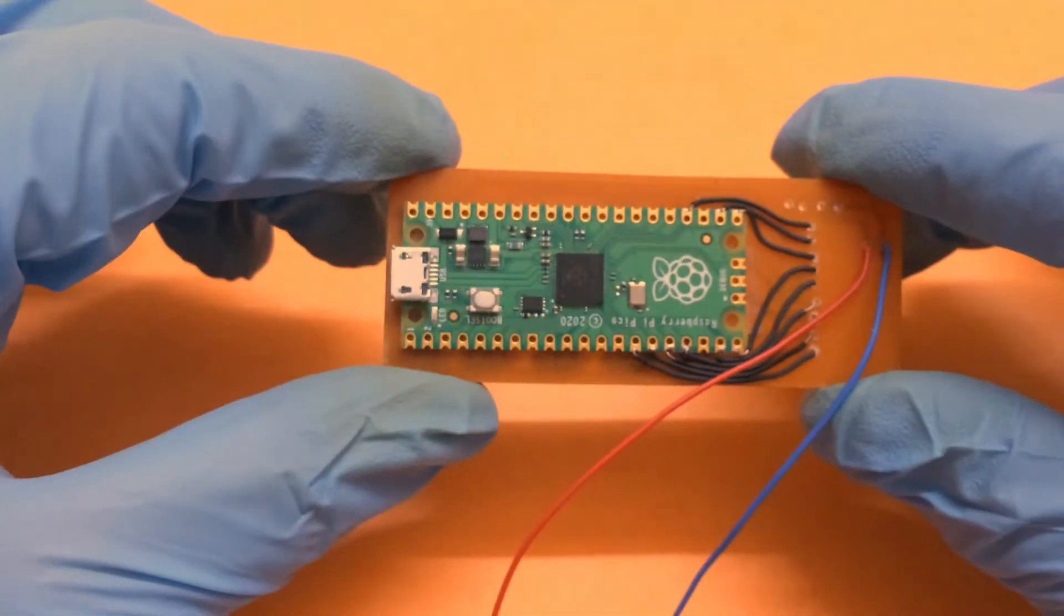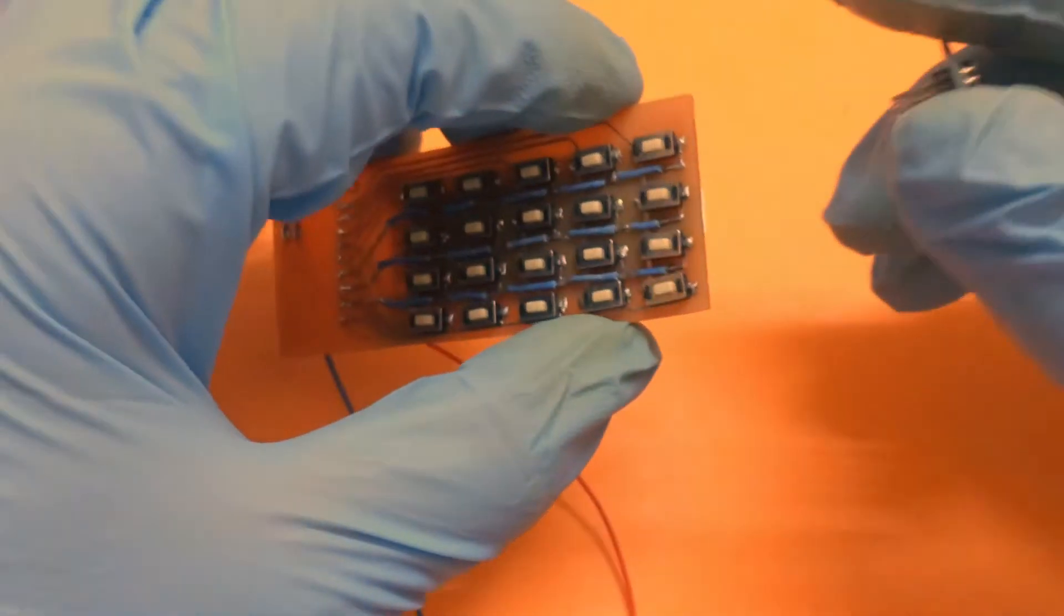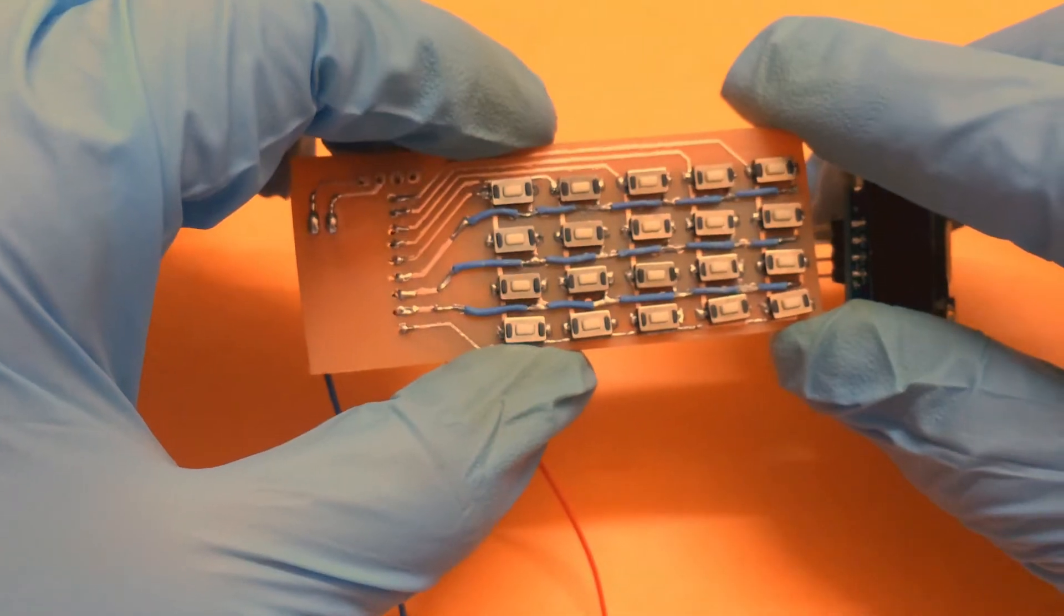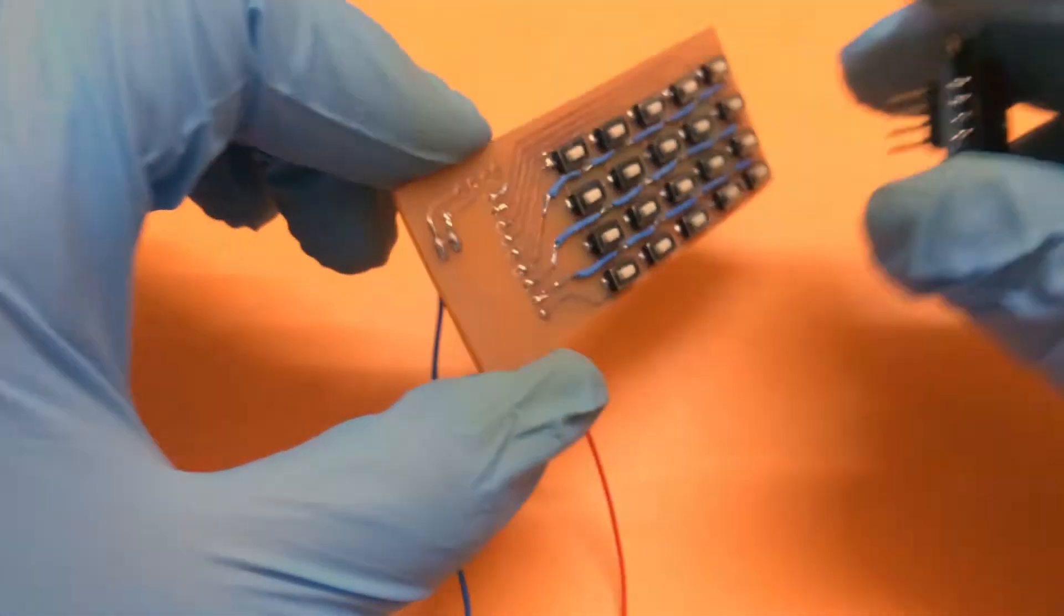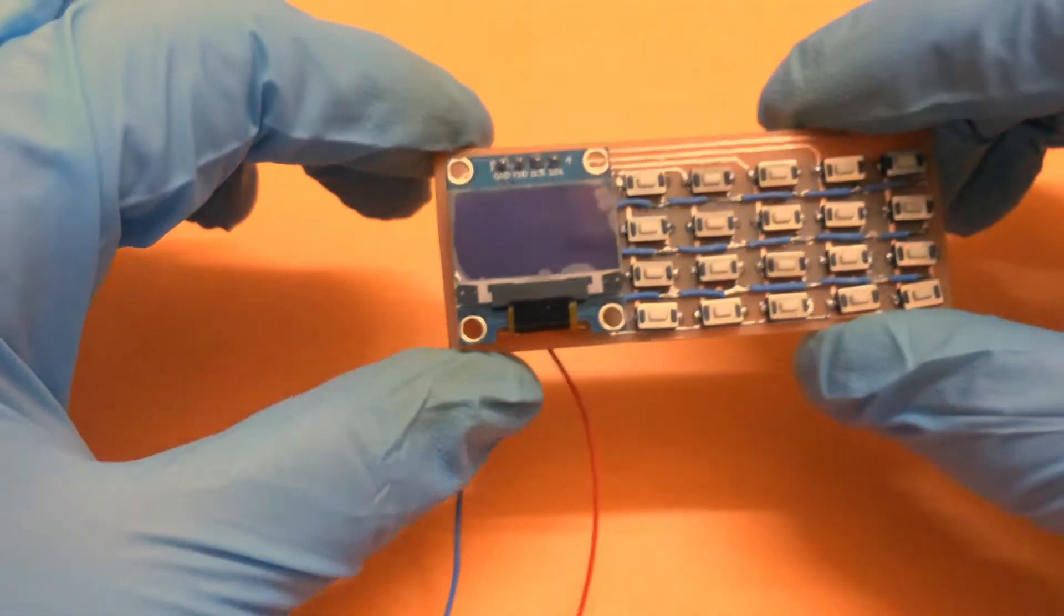After all the connections to button matrix, now we can move forward to connect OLED display and solder the SDA and SCL pins to I2C port 0 of Pico, GPIO number 20 and 21.